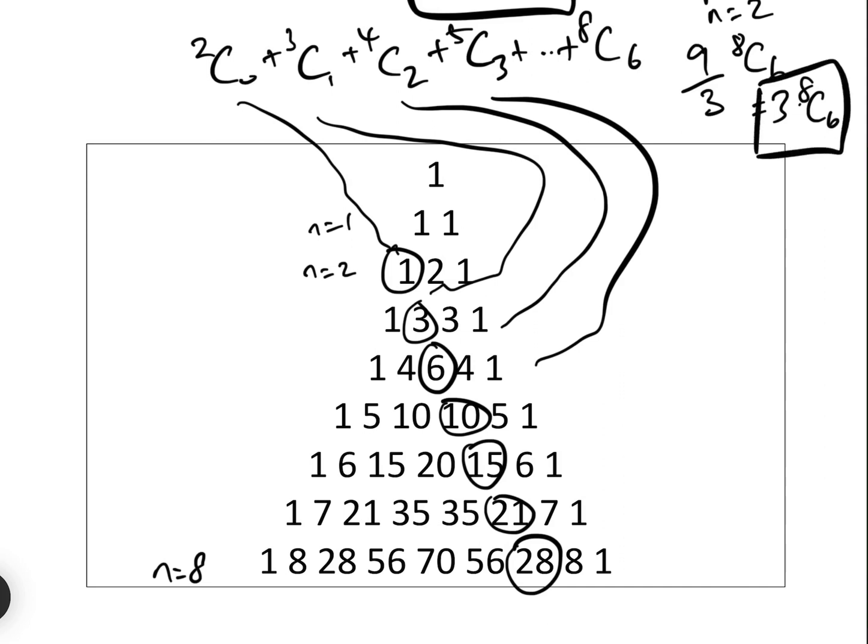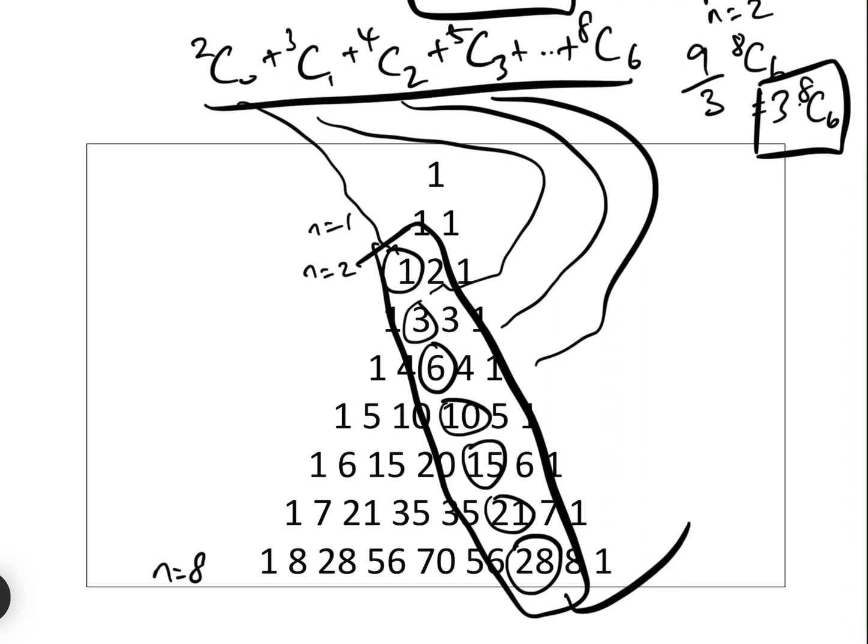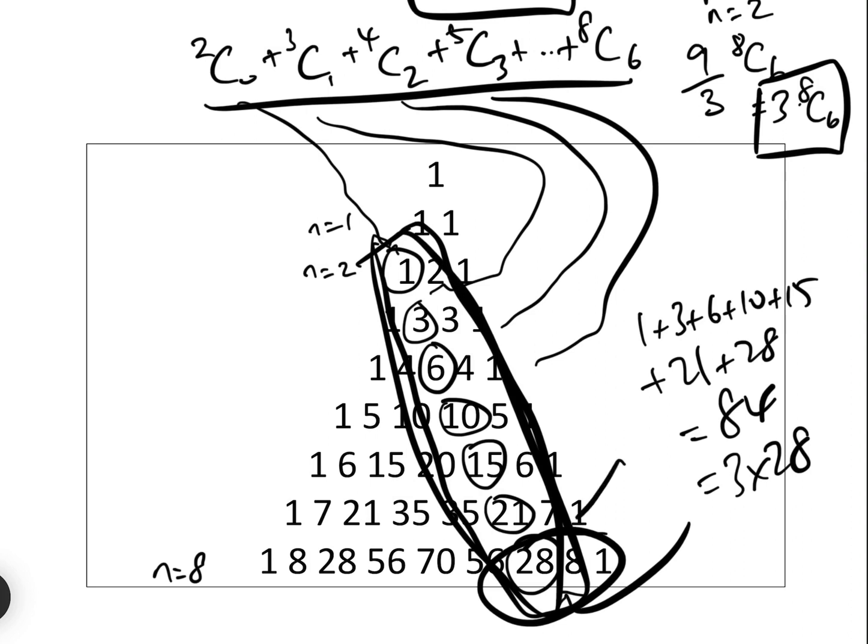Let's add them up: 1 add 3 add 6 add 10 add 15 add 21 add 28 equals 84, which equals 3 times 28. So indeed, hey presto, C 8 6, which is that one, is equal. So the sum of all of that equals 3 times C 8 6, and that just gives you a nice visualization of what we're doing.